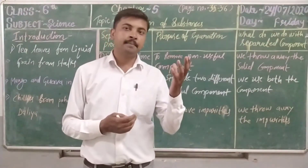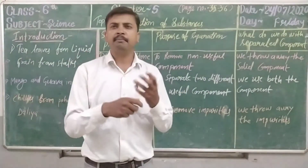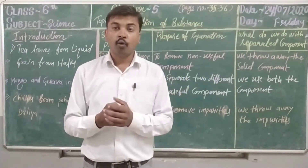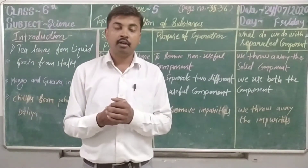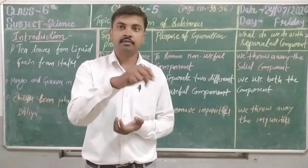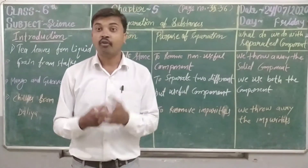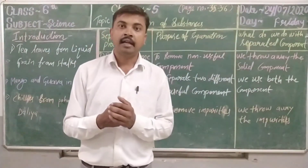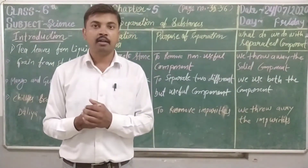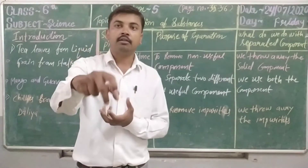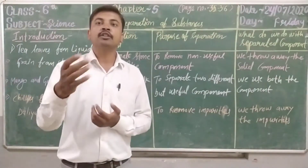When we go to purchase vegetables — tomato, brinjal, or banana — we always select the pieces. Why? What is this process of selection? This process is called separation. Why do we need separation? Because we always want good food or useful substances and want to remove the impurities or waste substances.